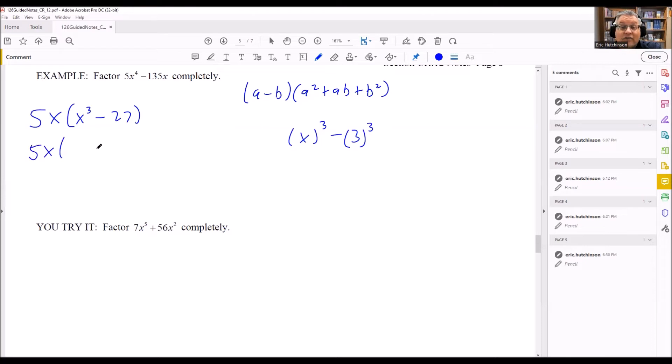We're still going to carry down the 5x. We have a minus b, x minus 3. Then we have a squared, so it's x squared, plus ab, so it's going to be plus x times 3, and then plus 3 squared. If we simplify that, we get 5x times x minus 3 times x squared plus 3x plus 9, and so that would be factored completely.